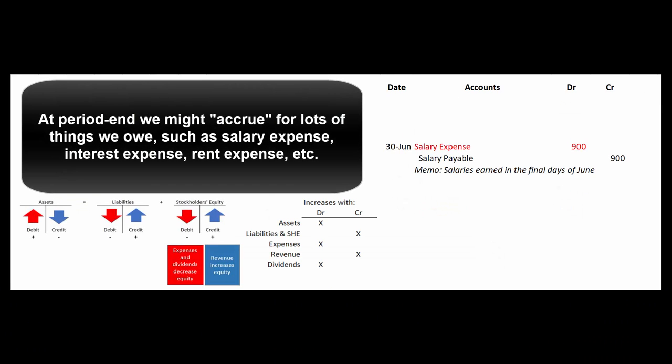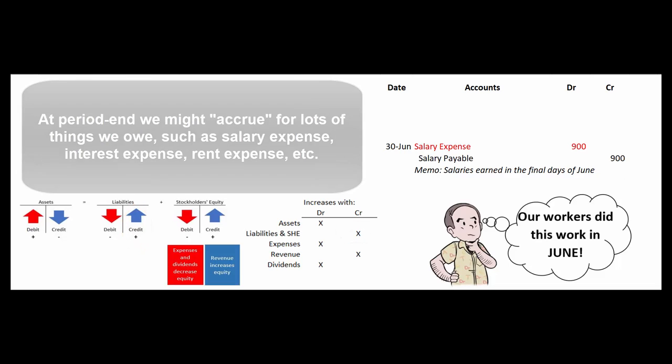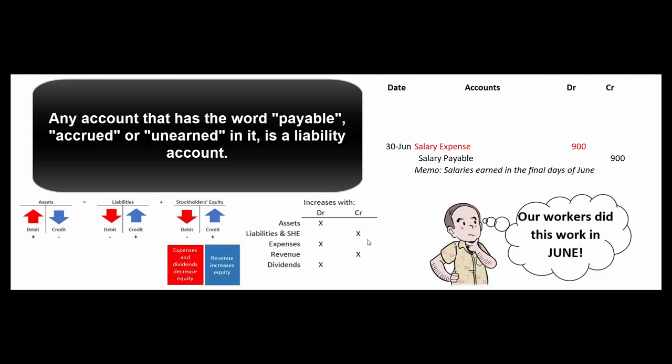Another example of trying to get the expense into the right period would be accruing for salary expense. We get to the end of June and we owe our workers $900, but payday isn't until early July. We still want to get that expense because they did that work in June. We want to get that expense into June. So we debit salary expense, and we credit salary payable for let's say $900. Payable means that it's a liability account. Any account that has the word accrued, payable, or unearned in it is a liability account and increases with credits.